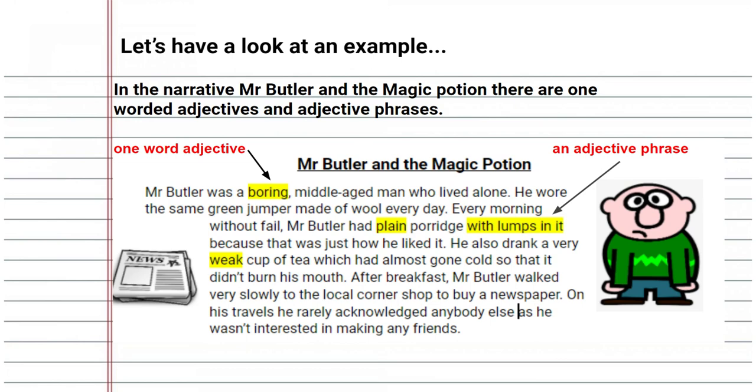Example, Mr. Butler was a boring middle-aged man who lived alone. Boring is the one-word adjective. And Mr. Butler had plain porridge with lumps in it. With lumps in it is an adjective phrase.